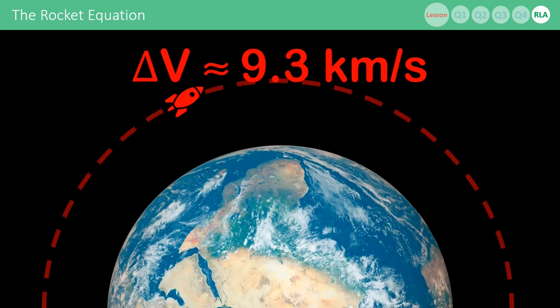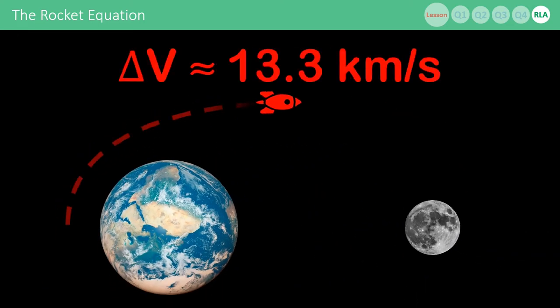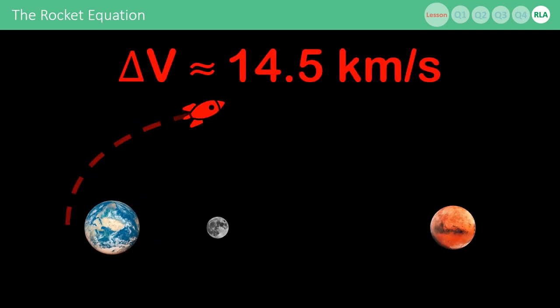For example, launching from the ground to a low earth orbit will cost about 9.3 kilometers per second of delta V, going from the earth to the moon will cost about 13.3 kilometers per second, and going from the earth to Mars will cost about 14.5 kilometers per second.